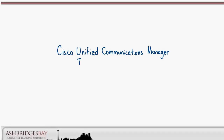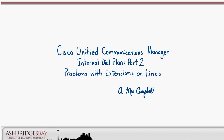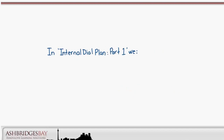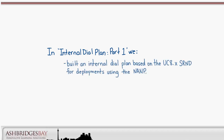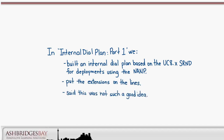Welcome to our Whiteboard Drawing: Cisco Unified Communications Manager, Internal Dial Plan Part 2 — Problems with Extensions on Lines. In our Whiteboard Drawing Internal Dial Plan Part 1, we discussed building an internal dial plan based on the UC8.x SRND for deployments using the North American Numbering Plan. In that drawing, we put the extensions on the lines. We said this was not such a good idea. In this drawing, we'll explain why.